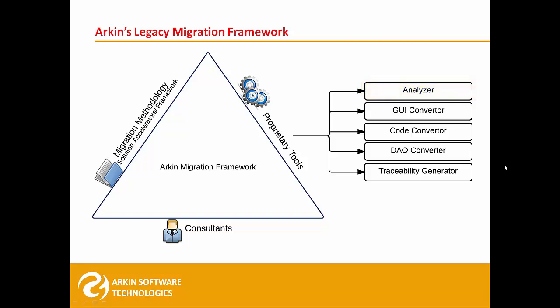The other important tool is the Traceability Generator. It maps legacy and auto-converted code blocks in a spreadsheet, serving as a beacon for consultants to identify code blocks that need manual attention. As much as we would like, no migration can be 100% automatic — there are always areas that need manual attention.